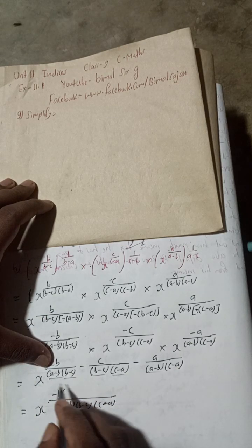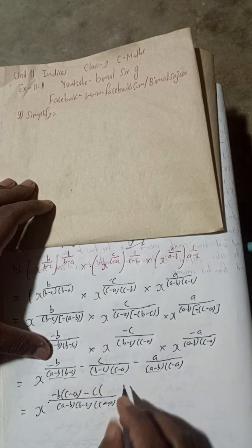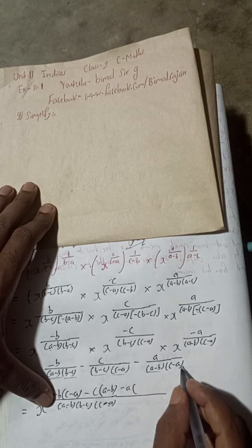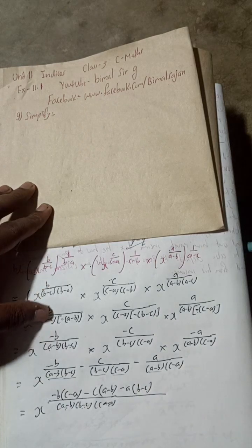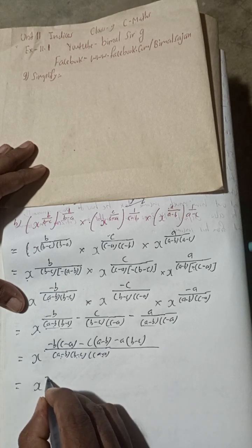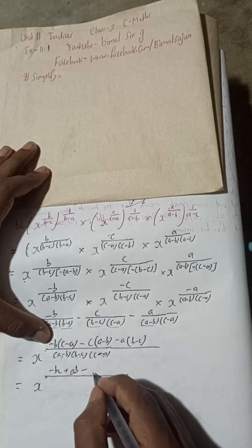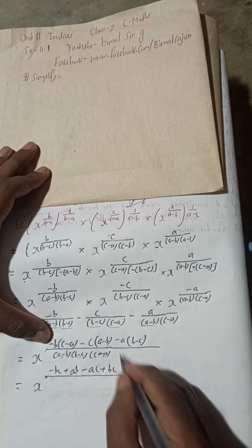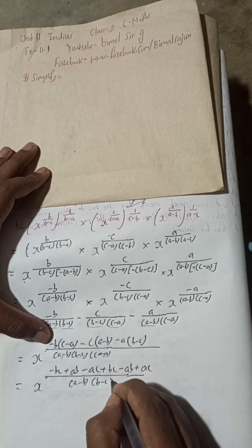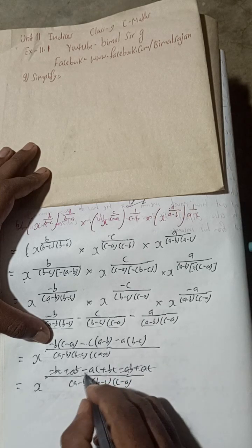The LCM for the three denominators is (A minus B)(B minus C)(C minus A). Multiplying through: first term minus B times (C minus A) gives minus BC plus AB; second term minus C times (A minus B) gives minus CA plus BC; third term minus A times (B minus C) gives minus AB plus AC. So in the numerator: minus BC plus BC cancel, plus AB minus AB cancel, minus AC plus AC cancel — everything cancels to zero.